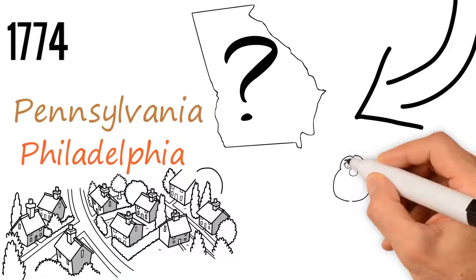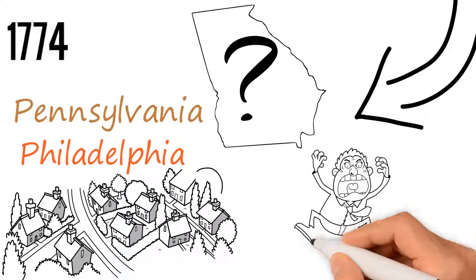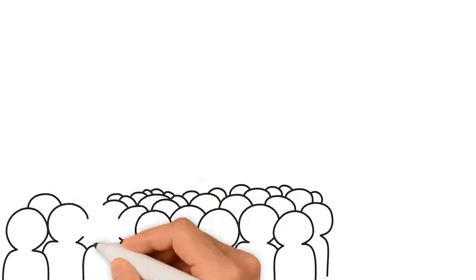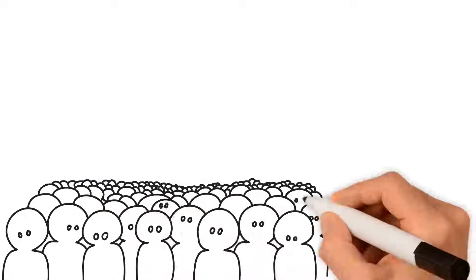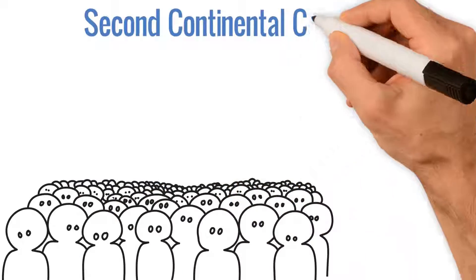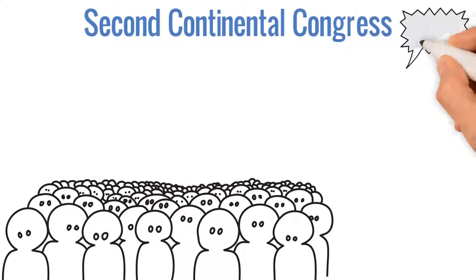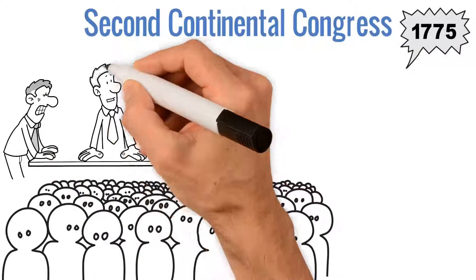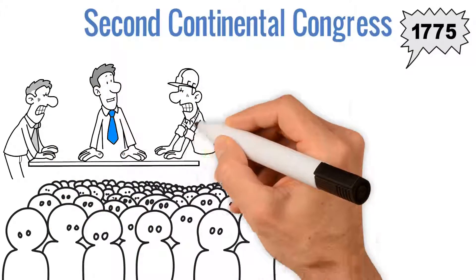These representatives were angry about British laws that treated them unfairly. They began to organize an army. The Second Continental Congress met in 1775 after fighting began between the colonists and the British Army.